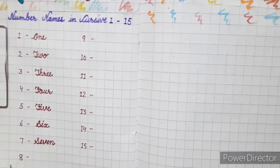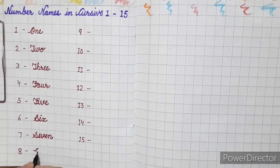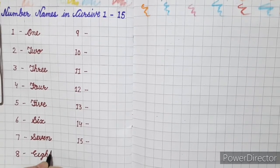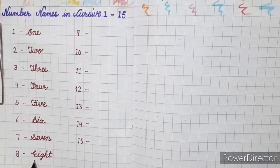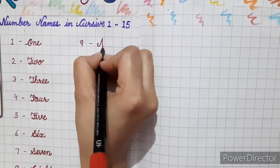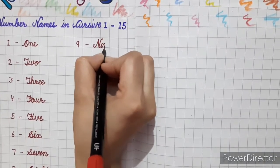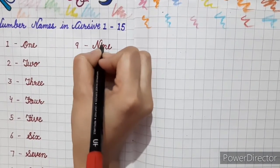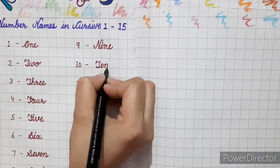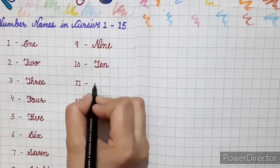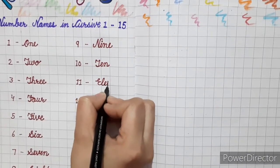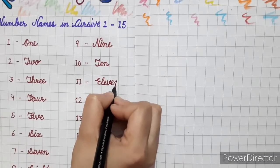7. 8 - EIGHT - 8. 9 - NINE - 9. 10 - TEN - 10. 11 - ELEVEN - 11.